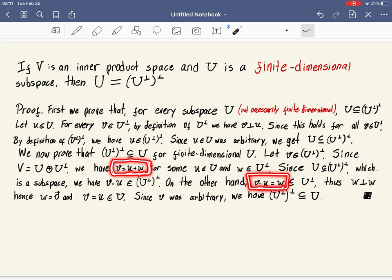v minus u is w, and w is in U⊥. That's how we define w. We define that u is in U, w is in U⊥. So this is in U⊥.